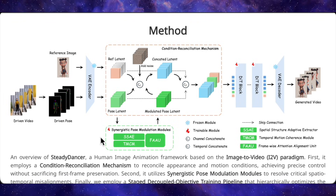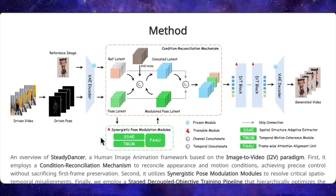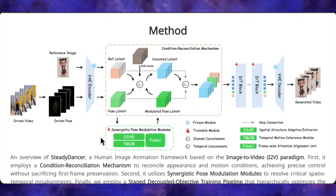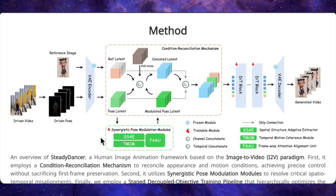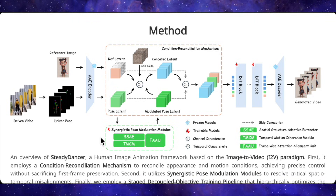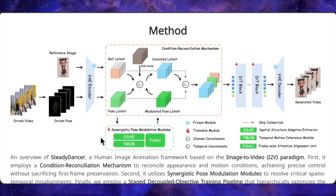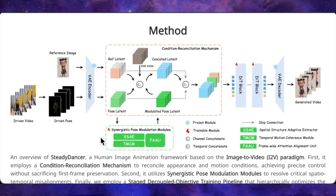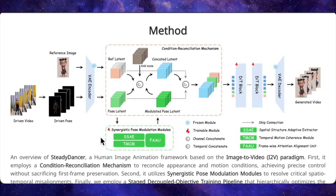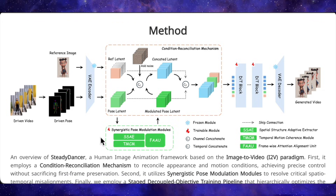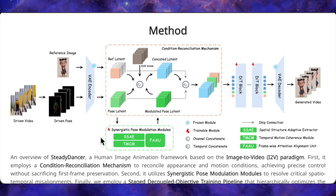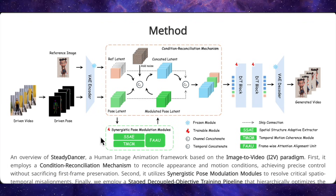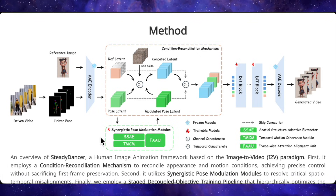Steady Dancer flips that logic. It treats your reference frame as sacred, generates the entire video starting from that exact frame, and forces every subsequent frame to stay visually consistent with it — which is way stricter but gives you that rock-solid identity preservation. The problem with being that strict is it makes motion control really hard, because now the pose has to adapt to the image instead of the image bending to fit the pose. To solve that, the team added what they call a condition reconciliation mechanism — a way of keeping the appearance signal and the motion signal separated instead of mashing them together.